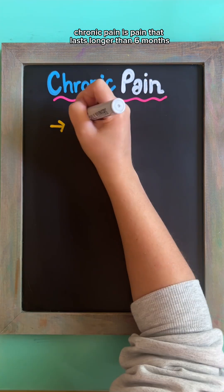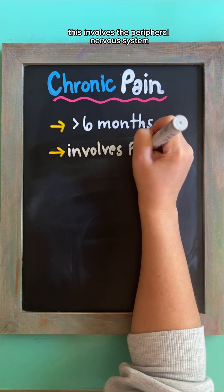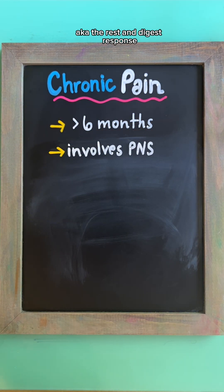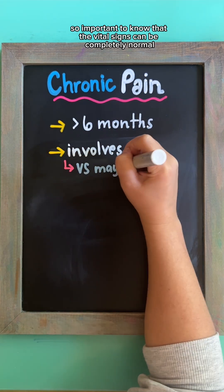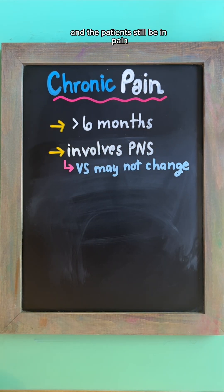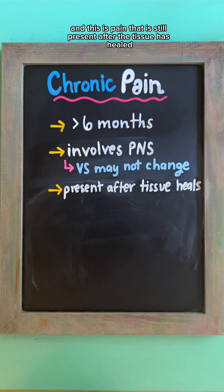Chronic pain is pain that lasts longer than six months. This involves the peripheral nervous system, aka the rest and digest response, so important to note that the vital signs can be completely normal and the patient still be in pain, and this is pain that is still present after the tissue has healed.